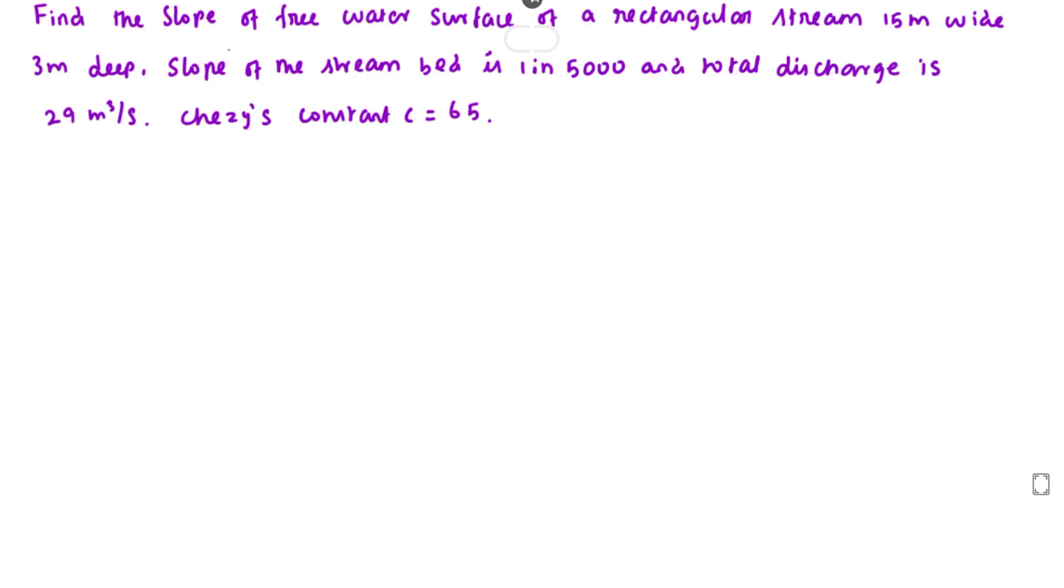Hello friends, welcome to Civil Engineering Exam. Today we're going to see a problem related to fluid mechanics and hydraulics. The problem is: find the slope of free water surface of a rectangular stream 15 meters wide and 3 meters deep. Slope of the stream bed is 1 in 5000 and the total discharge is 29 cubic meters per second. Chezy's constant C equals 65.